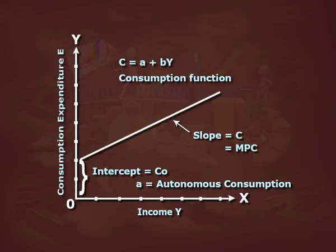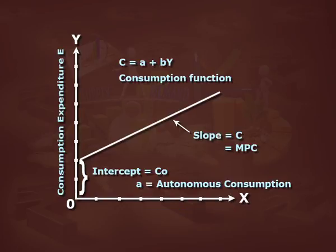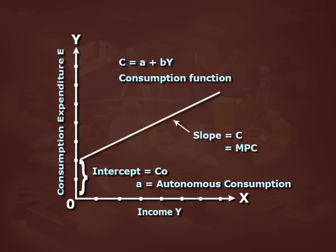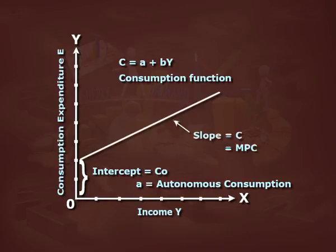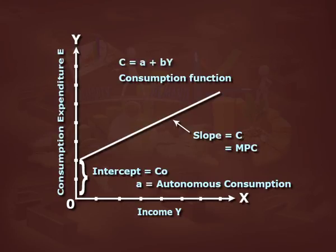In the figure, the Y-axis shows consumption expenditure C, while the X-axis shows income Y. The slope of C represents marginal propensity to consume, that is MPC. The line C = A + BY is the consumption function, and the line is linear because MPC is constant.